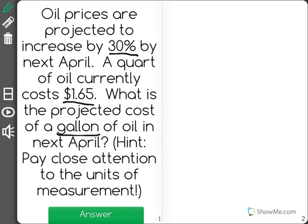It gives us the price of a quart. It says one quart of oil is currently $1.65, but it wants to know how much a gallon would cost. I know four quarts are in a gallon, so I'm going to find the current price of a quart.